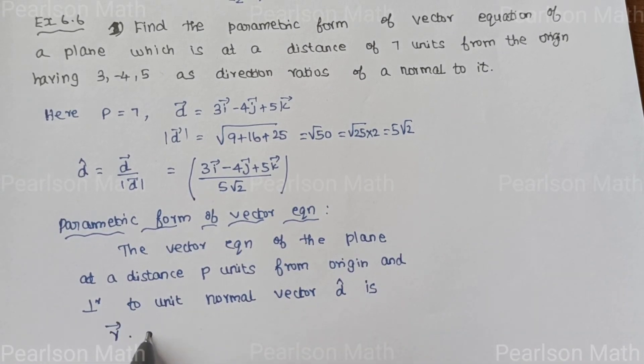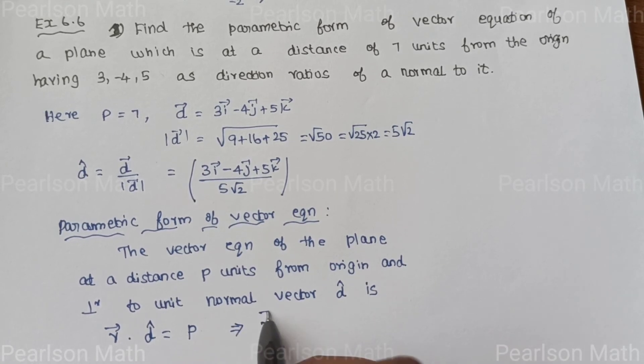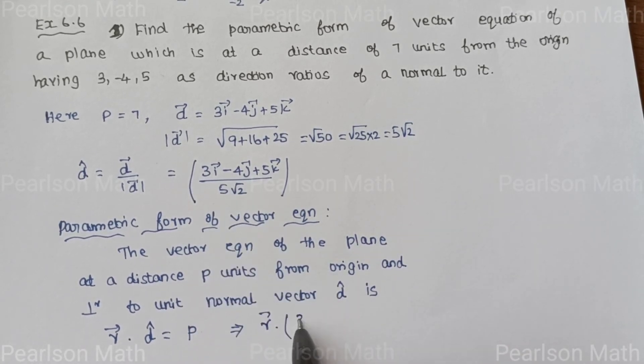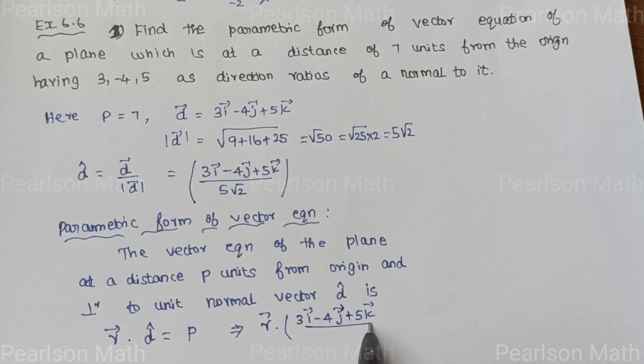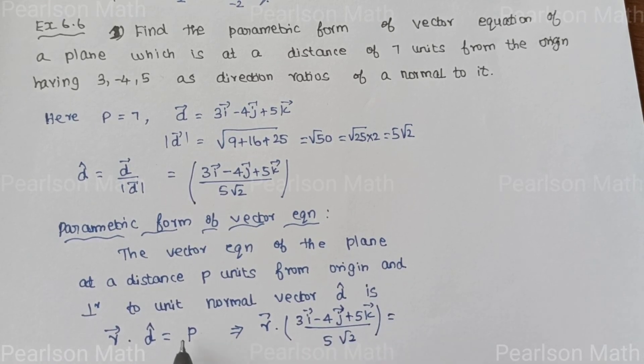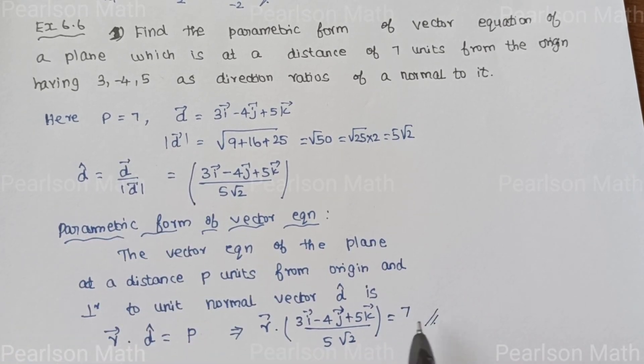r vector dot d cap equals P. So r vector dot 3i vector minus 4j vector plus 5k vector by 5 root 2 equals P. The value of P is 7, so r vector dot 3i minus 4j plus 5k by 5 root 2 equals 7. That's it.